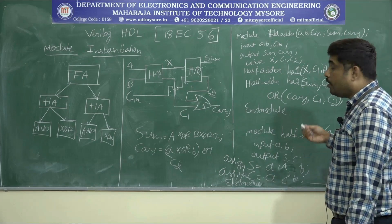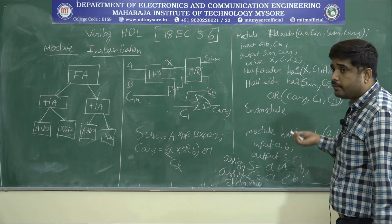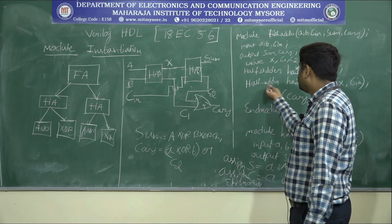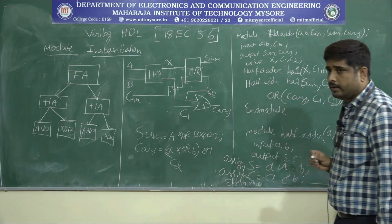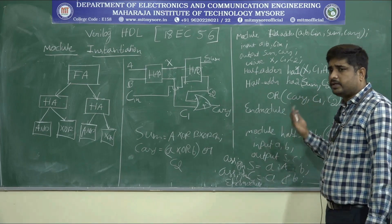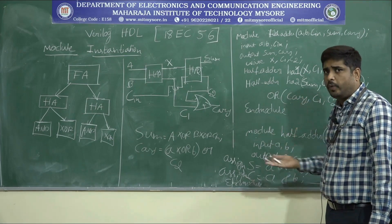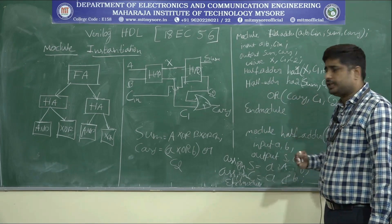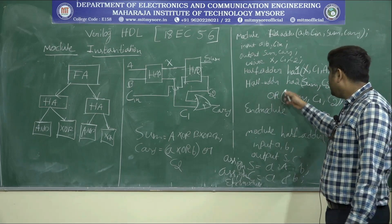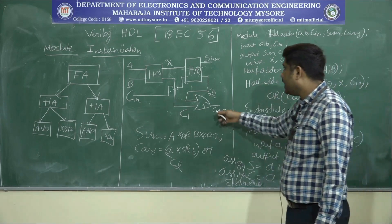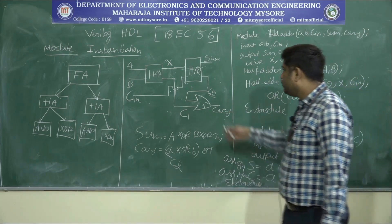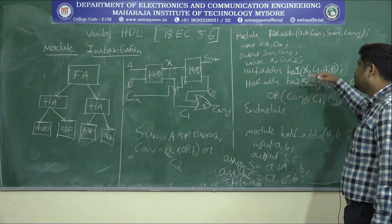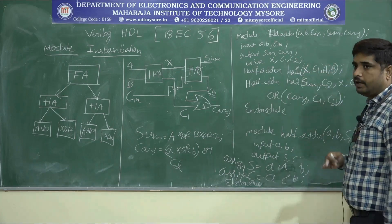Next, move on to the OR gate. There are some primitive gates available in Verilog descriptions, so we can use the OR function directly. OR, with carry as the output and C1 and C2 as the inputs. This completes the first part of the program. The two half adder instances and the OR gate are the instances here, and each instance requires a separate program — except for the OR gate, which is already available as a primitive.